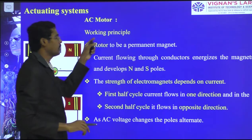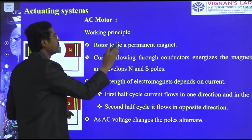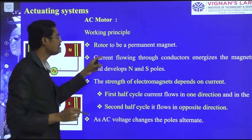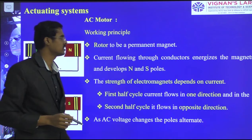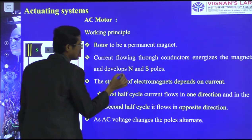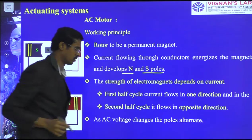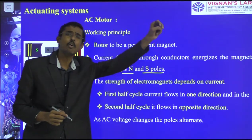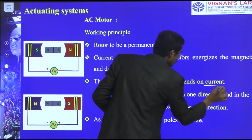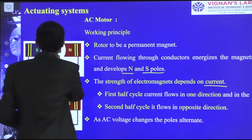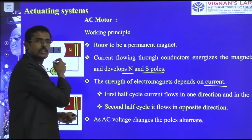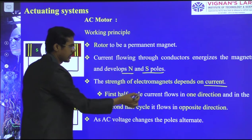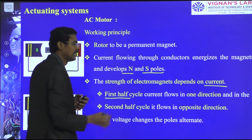Working principle: the rotor is taken as a permanent magnet. Current flows through the conductor, energizing the electromagnets and developing north and south poles. The strength of the electromagnetic field between the rotor and stator depends on how much current we supply. For the first half cycle, current flows in one direction.